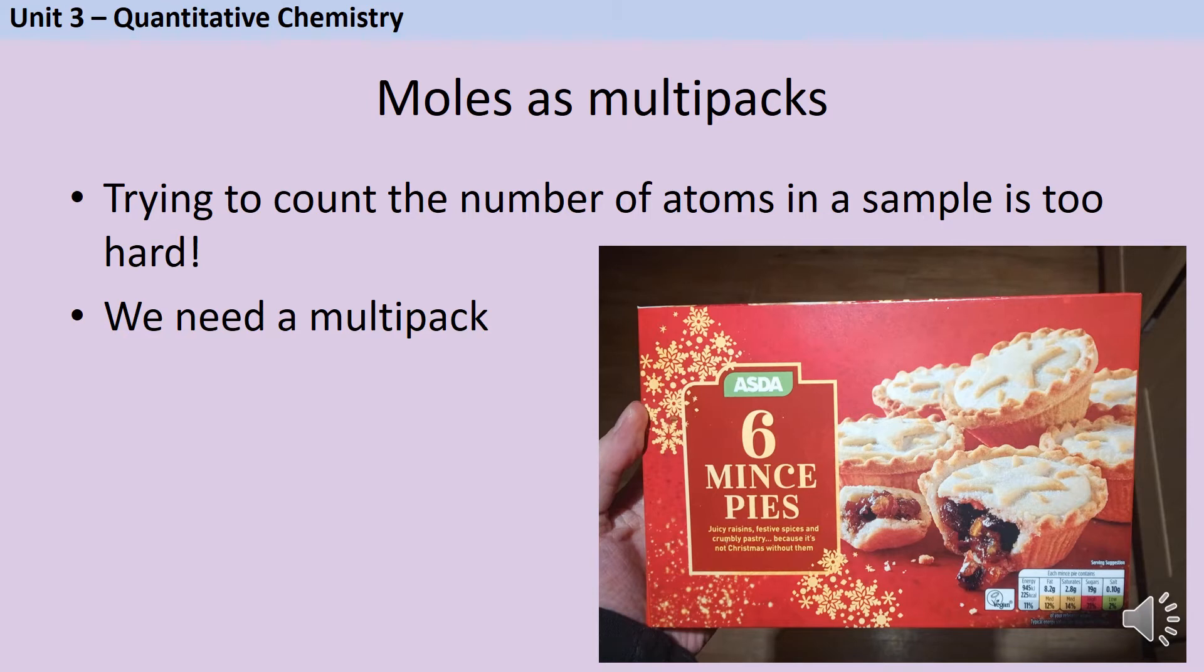Often in chemistry it's really useful for us to be able to compare the relative amounts of two different substances. But if we actually counted up the number of atoms, well atoms are tiny, so in any sample you're going to have billions and billions of them and the numbers just get really complicated to work with. One way that chemists get around this is by using something called the mole.